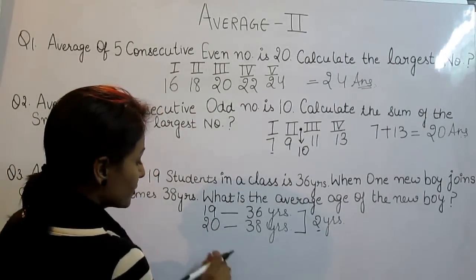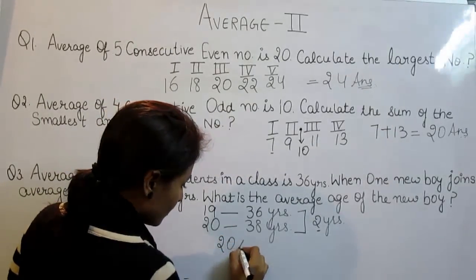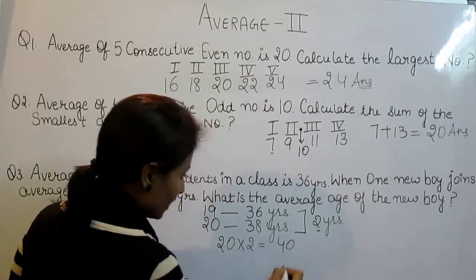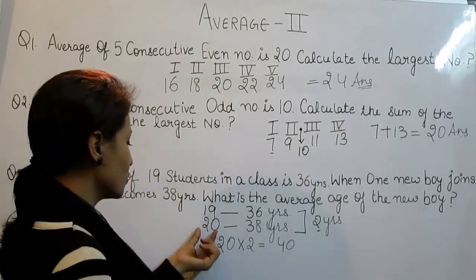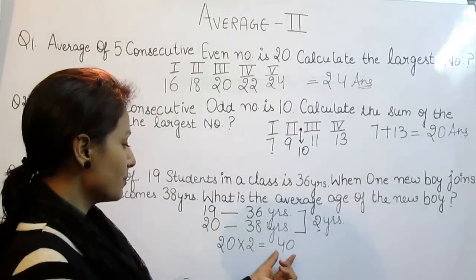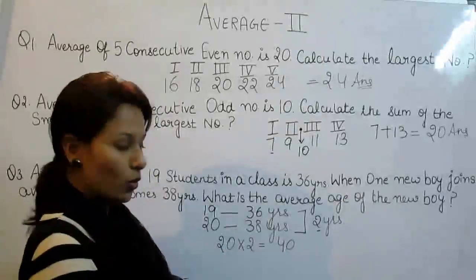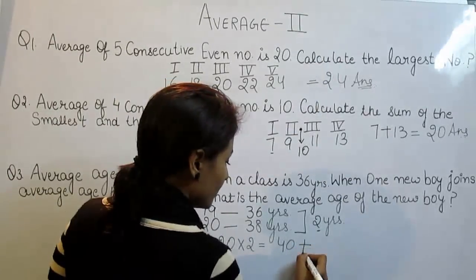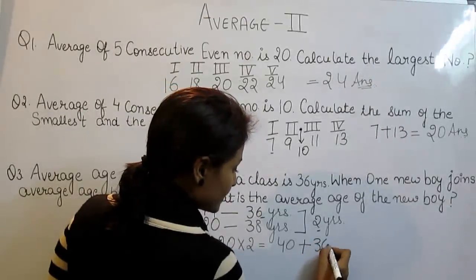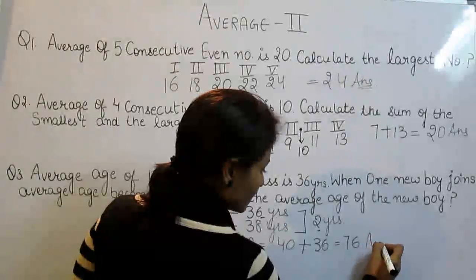This 2-year increase will affect all 20 students. When we multiply 2 by all 20 students, we get 40. And we have to get the average age of the new boy. So to this 40, we add the previous average, that is 36, and we get 76 as the answer.